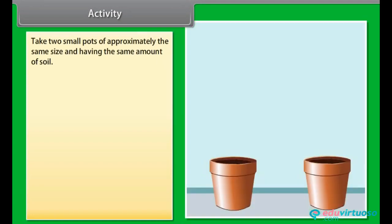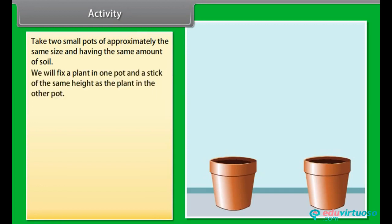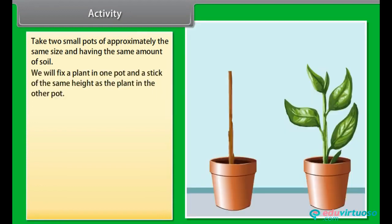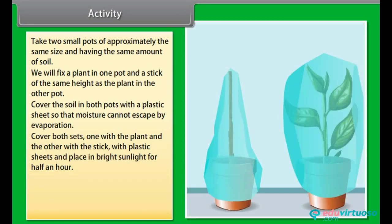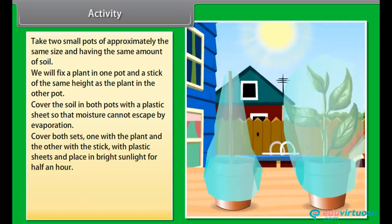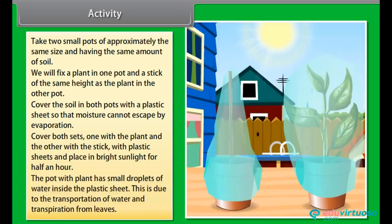Activity: take two small pots of approximately the same size with the same amount of soil. Fix a plant in one pot and a stick of the same height as the plant in the other pot. Cover the soil in both pots with a plastic sheet so that moisture cannot escape by evaporation. Cover both sets — one with a plant and the other with a stick — with plastic sheets and place in bright sunlight for half an hour. The pot with the plant will have small droplets of water inside the plastic sheet, due to the transportation of water and transpiration from the leaves.